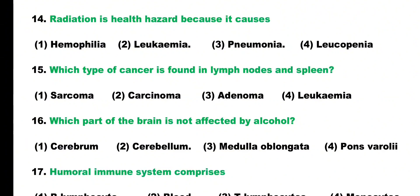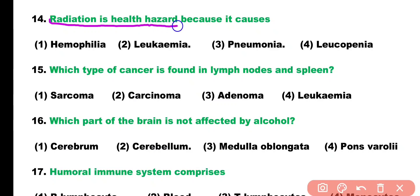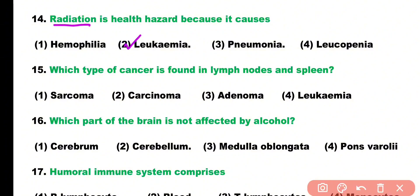Question number fourteen: radiation is a health hazard because it causes: hemophilia, leukemia, pneumonia, or leukopenia. Correct answer is option two — radiation is dangerous for health because it causes leukemia, or blood cancer.